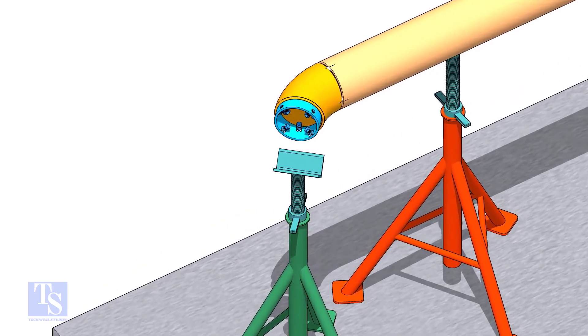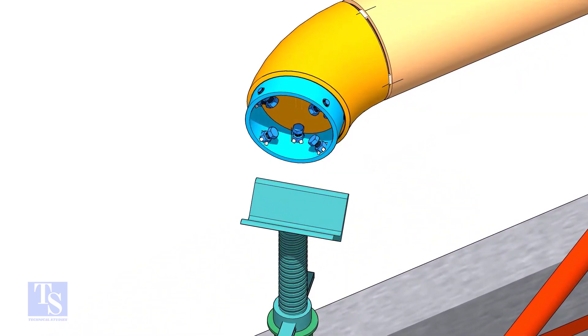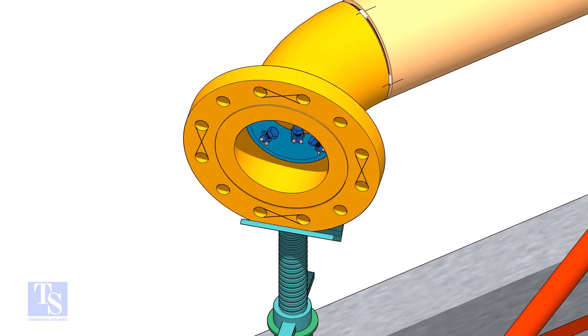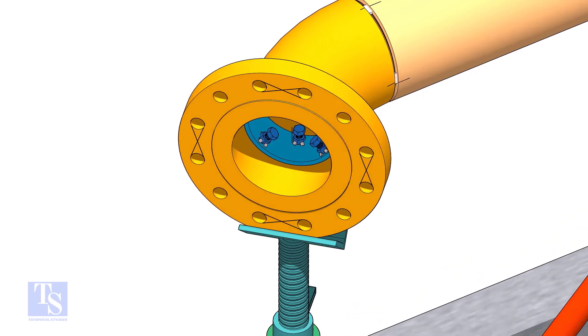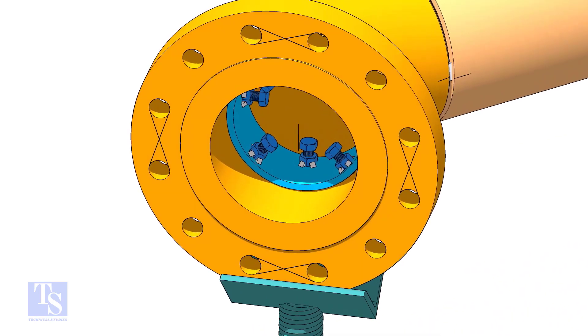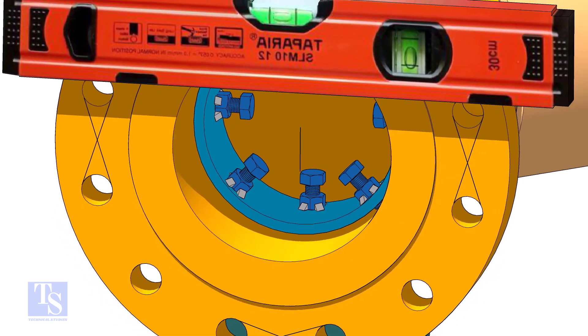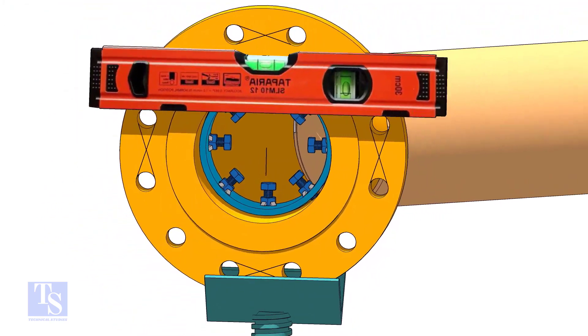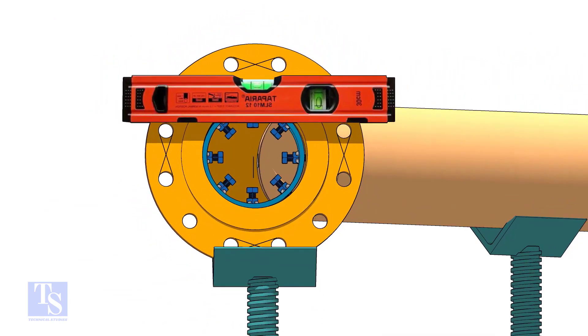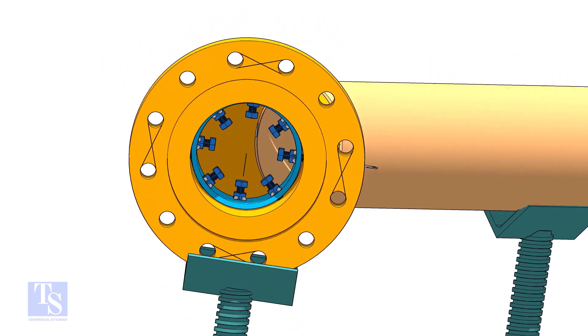Put the clamp in the elbow and tighten lightly. Put the flange in its position and maintain the level. Tighten the clamp bolts lightly. Check the gap and the overlap.